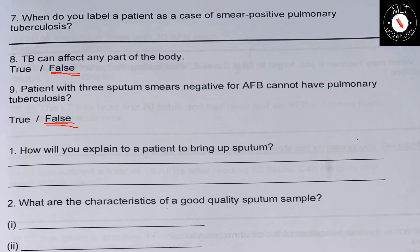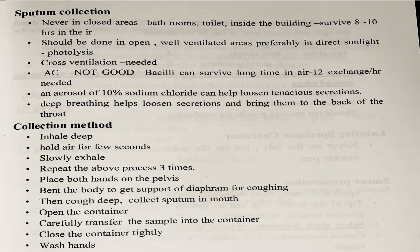How will you explain to a patient how to bring up sputum? Sputum collection should never be done in closed areas like bathrooms or inside a building, because TB bacilli survive 8–10 hours in the air. It should be done in open, well-ventilated areas, preferably in direct sunlight for photolysis. Cross-ventilation is needed; AC is not good for collection because bacilli survive a long time in air — 12 air exchanges per hour are required. An aerosol of 10% sodium chloride can help loosen tenacious secretions.